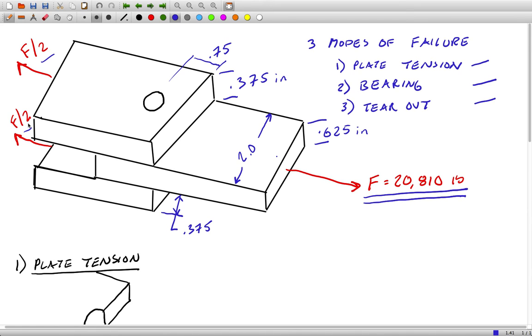With that in mind, since 0.625 is not quite double 0.375, the center plate should have higher stresses. It's got double the force with less than double the area, so it should be the one leading to failure.